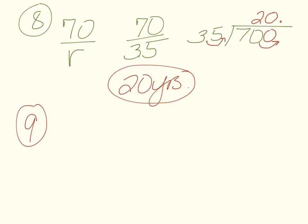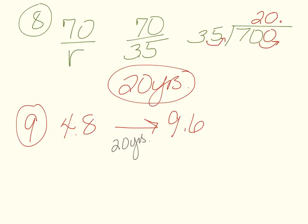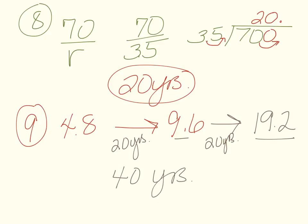Number nine: how long will it take Togo to reach 19.2 million people? We started at 4.8 million — in 20 years it doubles to 9.6 million. In another 20 years it doubles again: 9.6 times 2 is 19.2 million. So the time to reach 19.2 million is 40 years total. That's the end of our population math problems.